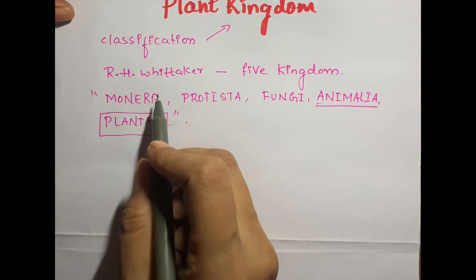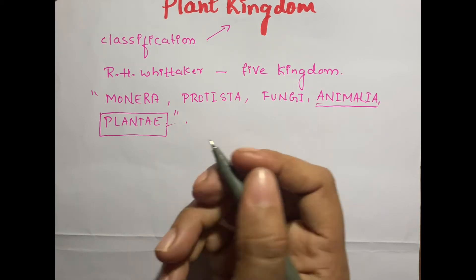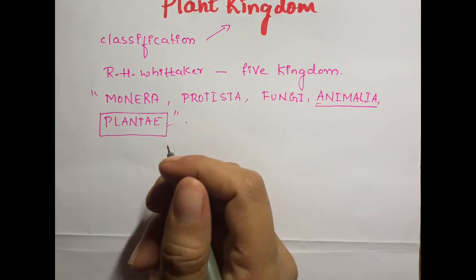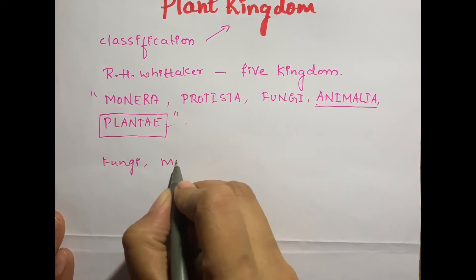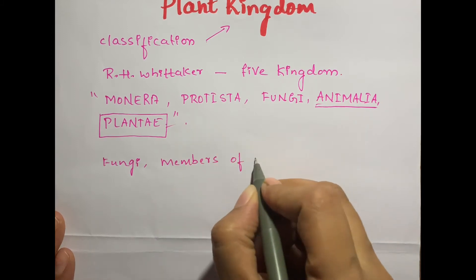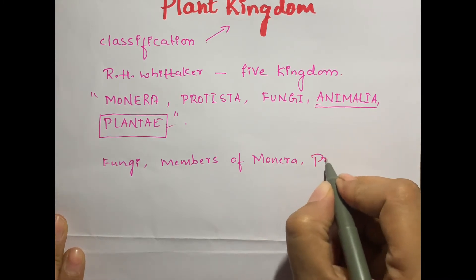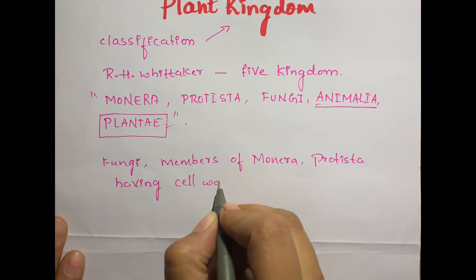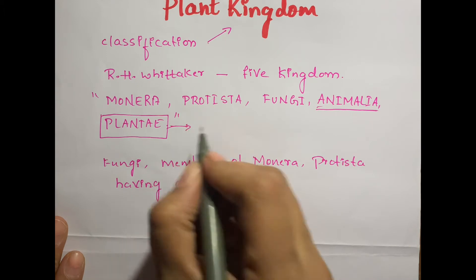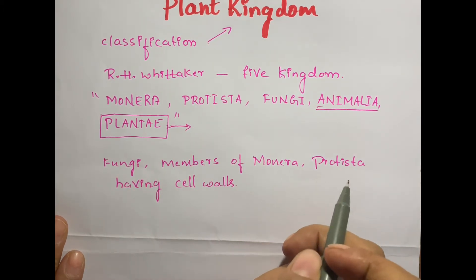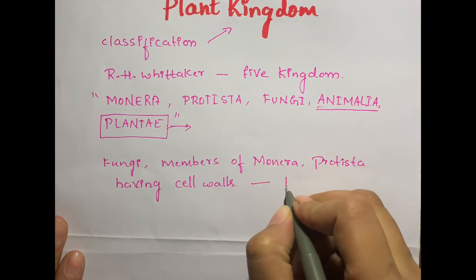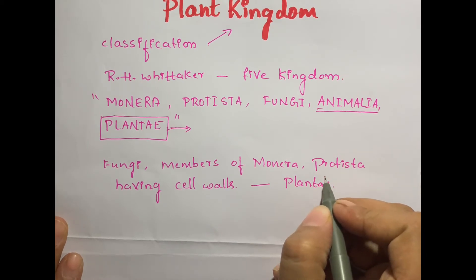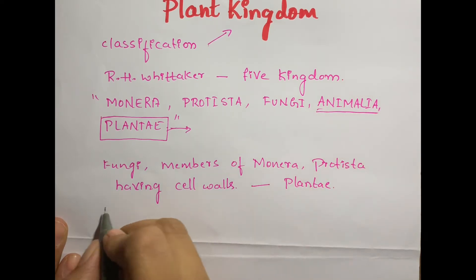Before R.H. Whittaker's system of classification, there were two, three, and four kingdom systems. In all these systems, there were few organisms — that is, fungi and members of Monera and Protista — that had cell walls. The distinguishing feature of plants is having a cell wall. So fungi and those members of Monera and Protista which had cell walls were all placed under the kingdom Plantae.